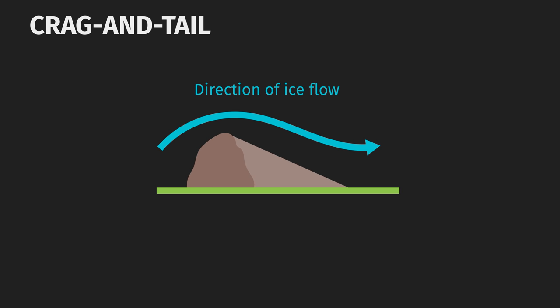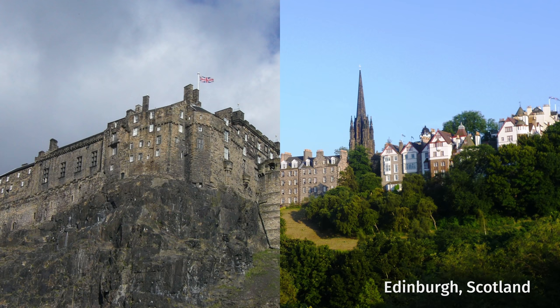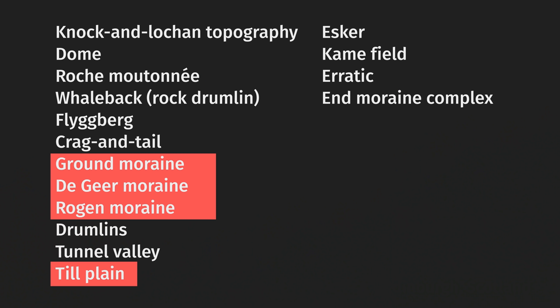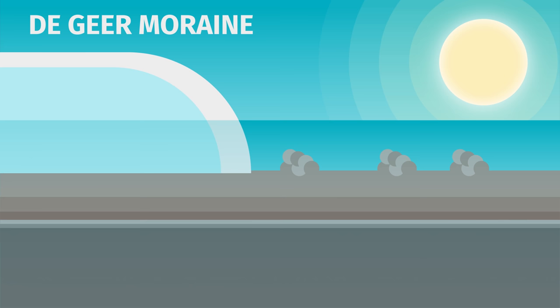Expect important settlements to spring up on and around crag and tails. The crag is easily defensible — prime castle real estate — and the tail is a great location for a settlement. Edinburgh Castle in Edinburgh, Scotland is built on a crag, and the city's old town is located on the tail. Various types of ground moraine may occur in post-continental glacier lowlands. De Geer or washboard moraines form wherever the continental glacier met a sea or lake, and they are basically the same as recessional moraines, only they form underwater.